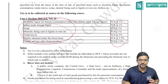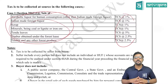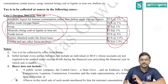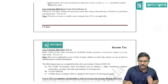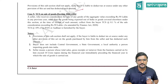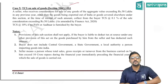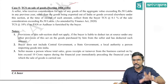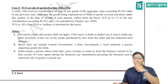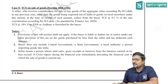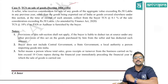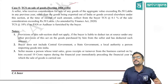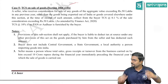Section 206C subsection 1 covers specified goods — when the seller sells these goods, he has to collect TCS at the specified rate. Section 206C(1H) covers any goods — if the seller is selling any goods worth more than 50 lakh and the seller's turnover or gross receipts in the last year was more than 10 crore, then he has to collect TCS at 0.1% on the amount exceeding 50 lakh.